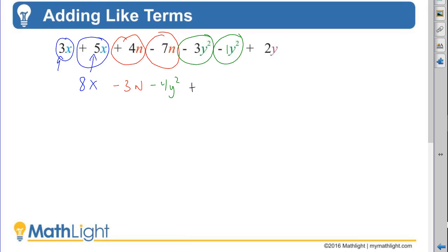And then I just have this plus 2y. I can't add a y squared and a y because they're not like terms, because even though they have the same variable, the variables are not to the same exponent.